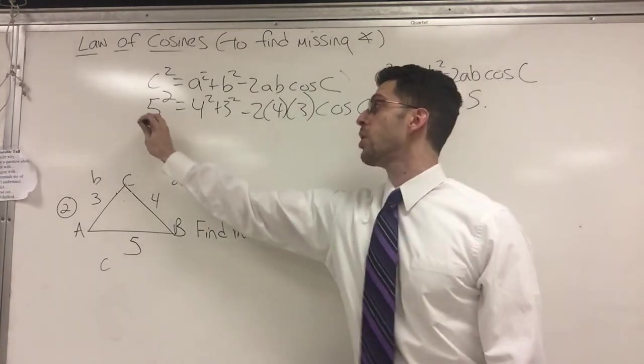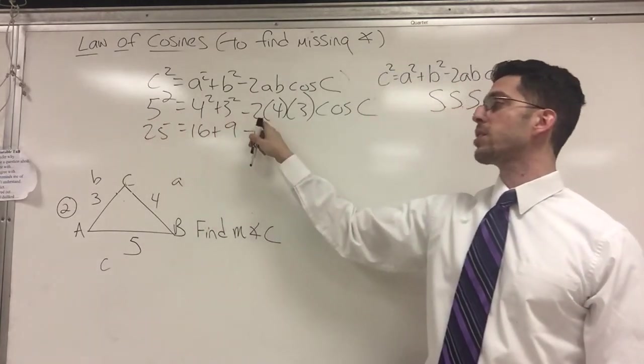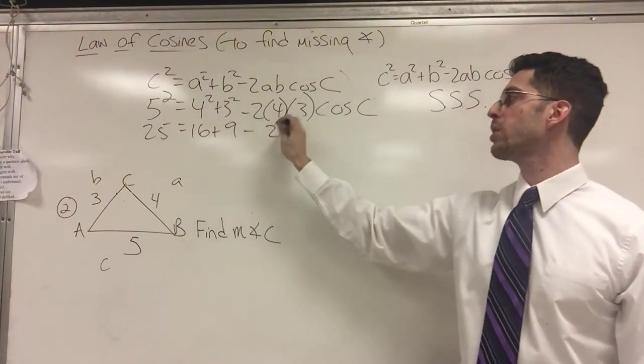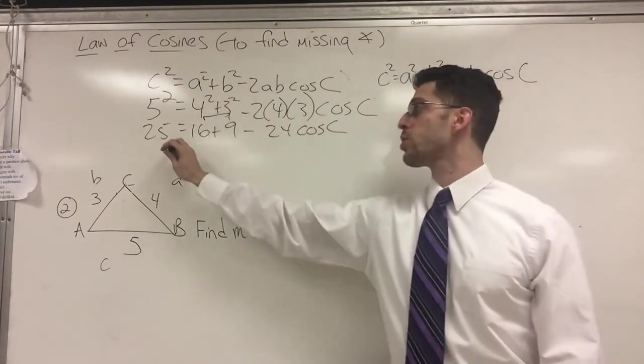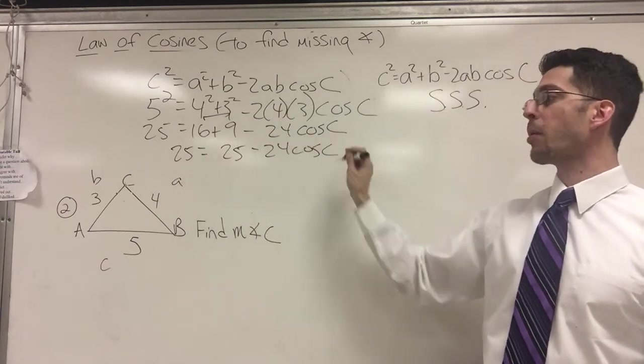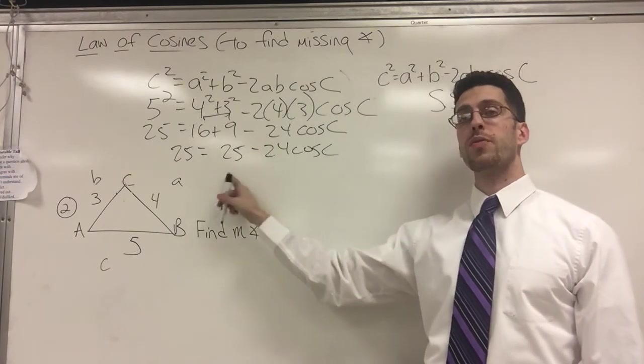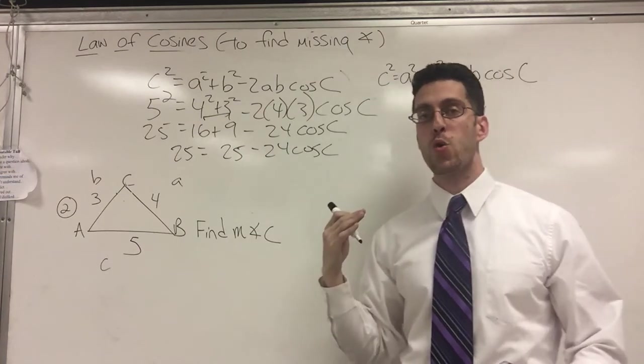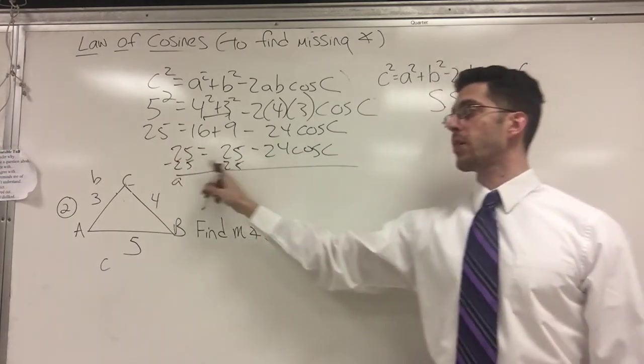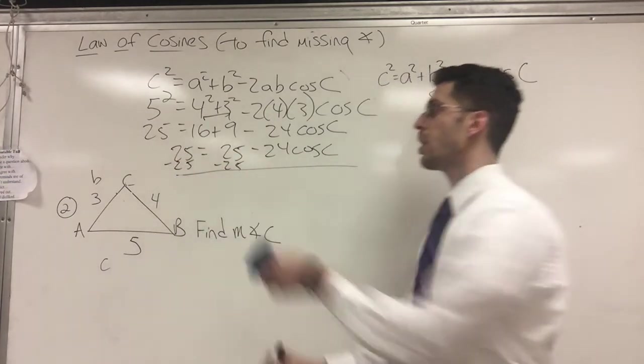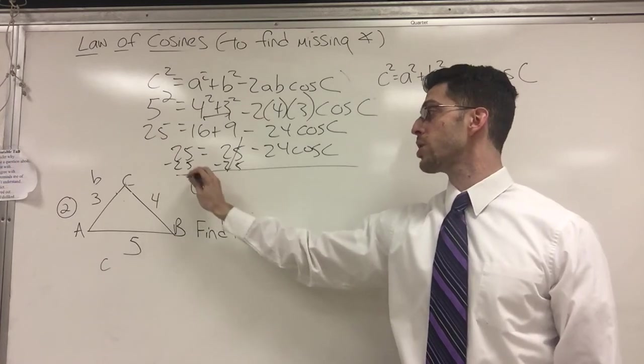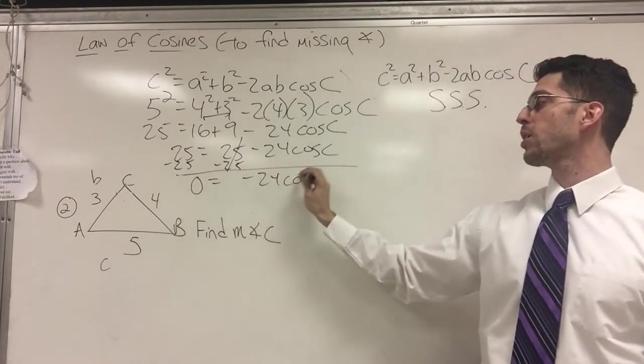Real easy. No need for a calculator. 25 equals 16 plus 9 minus 24 cosine C. Let's combine like terms. 25 equals 25 minus 24 cosine C. And remember that rookie mistake I said. People are going to want to do 25 minus 24. It looks so easy. You can get 1 cosine C. No. Not like terms. Minus 25 here and here. Subtract 25 on both sides. Cancel. And this happens to also cancel, but I got to write a 0.